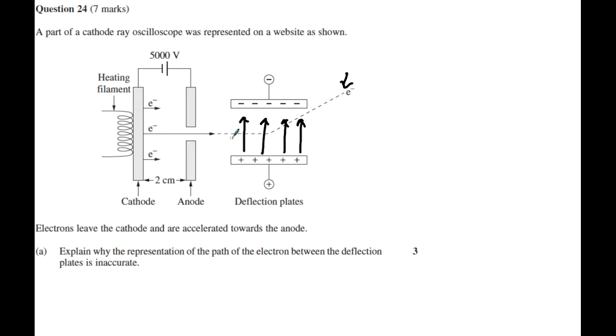That's error number two. Number three is that we have a straight line deflection over here and that is incorrect as well. As an electron enters the field it experiences a force which means it will start to accelerate, and if it starts to accelerate its displacement will be ever increasing in the vertical direction.